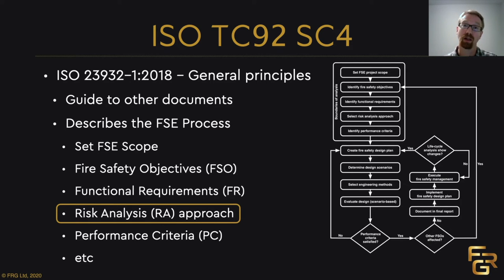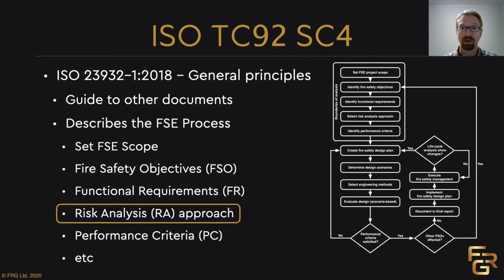Before this version — the 2018 version of the document — it wasn't perfectly clear what a risk analysis was in the area of fire safety engineering. But now we've done a lot of revision and it's based on Pate-Cornell's categorization. Figure two in ISO 23932 describes the different types of risk analysis approaches you can use in fire safety engineering.